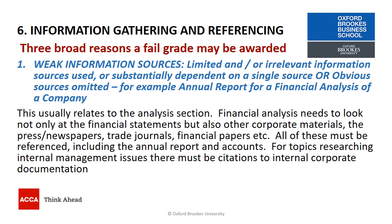Criteria 6 is information gathering and referencing, and there are three broad reasons a fail grade may be awarded here. First of all, it's to do with weak information sources. These could be limited or irrelevant information sources, but also if you substantially depended upon a single source, or you omitted obvious sources such as the annual reports for a financial analysis of a company. This usually relates to the analysis section.